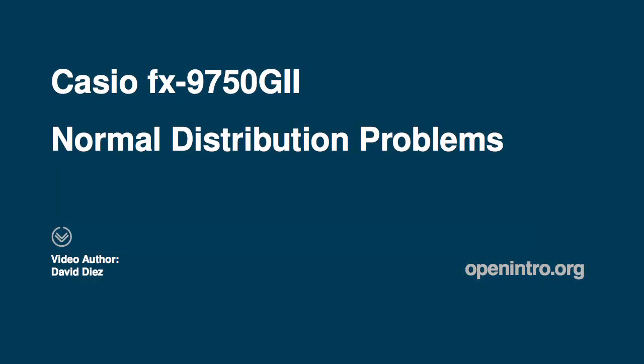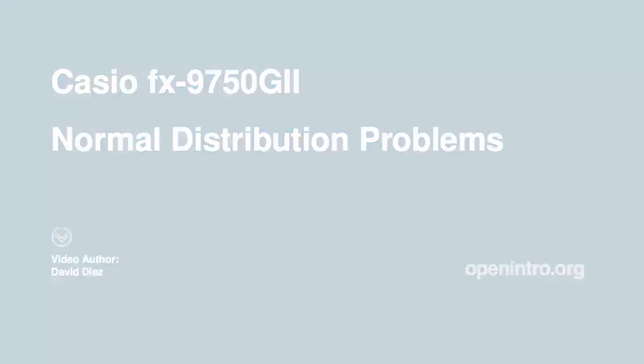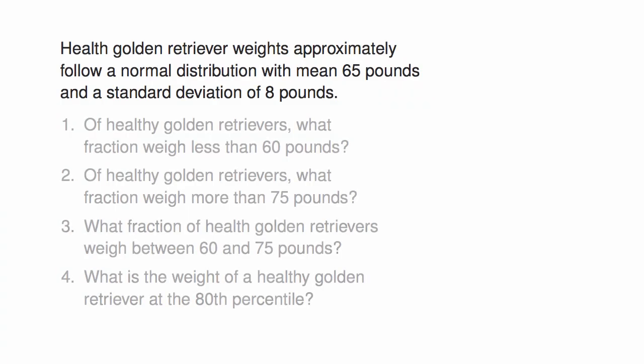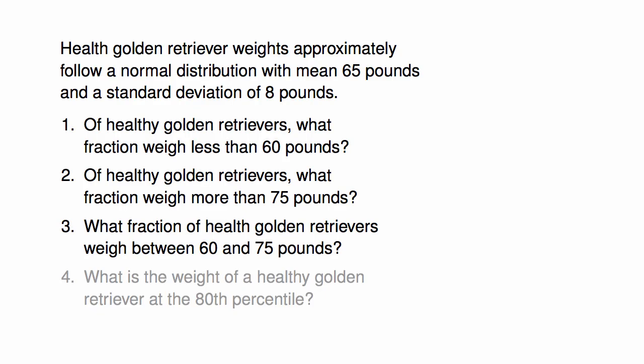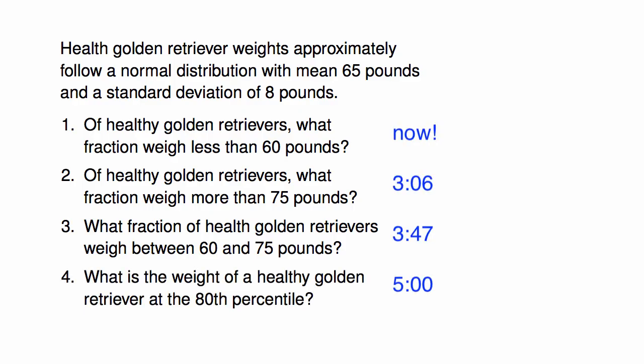I'm going to cover four normal distribution problems using a Casio 9750 graphing calculator. Healthy golden retrievers weights approximately follow a normal distribution with a mean of 65 pounds and a standard deviation of 8 pounds. The first three questions focus on finding areas under the normal curve, and the last is about finding a golden retriever weight for a particular percentile. Jump ahead to any of the examples using the times shown here.